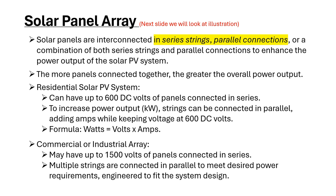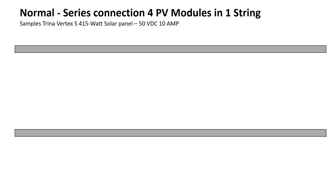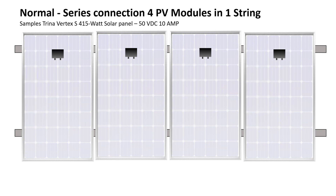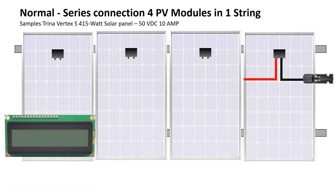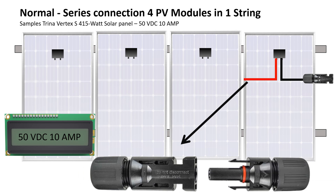We're quickly going to look at a normal series connection — four panels into one string. We'll use a simplified panel just for illustration. Each panel is 50 volts DC and 10 amps. You connect them on your rails or tracks using end clamps and mid clamps. On each panel you'll have the MC4 connectors, and as you interconnect them you'll see the voltage increase.